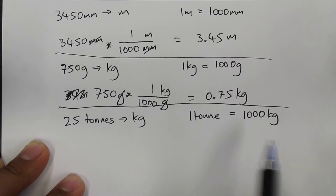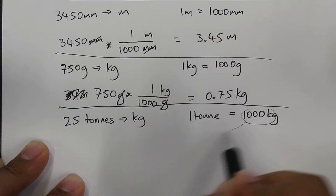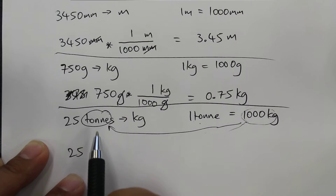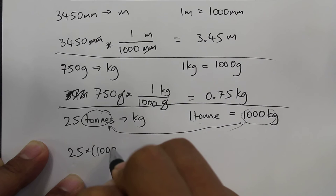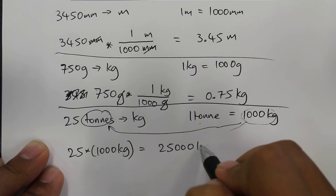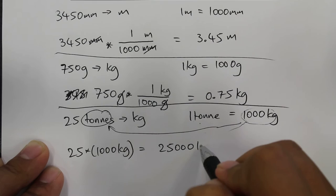So we'll do the same process here except, well actually no, we'll use a different method. So these two, we used the elimination method. This one here, we use the substitution method. We know that 1 ton is equal to 1000 kgs. So we can take this 1000 kgs and directly replace it into this value here. So this is the substitution method. So here we'll go 25 and now instead of tons, we'll write 1000 kg. So times 1000 kg, 25 times 1000, we get 2500 and the unit is kg. So that's the third one.